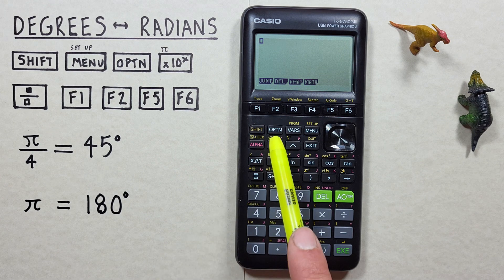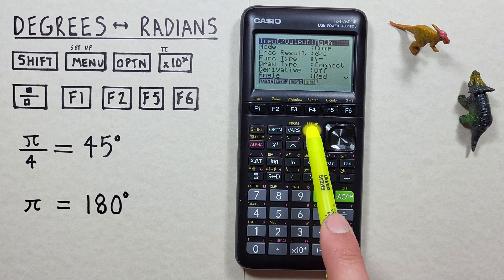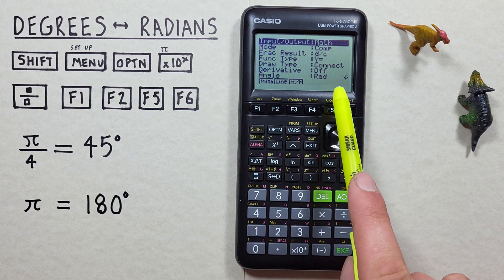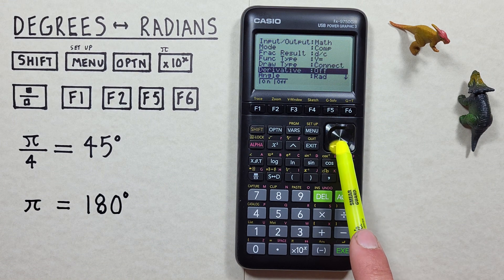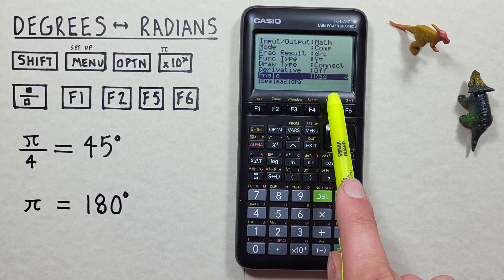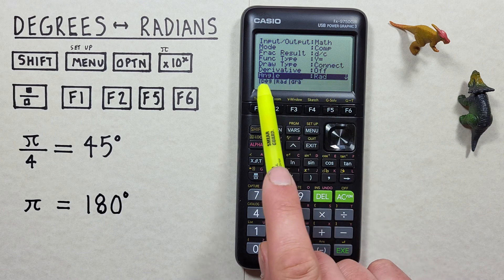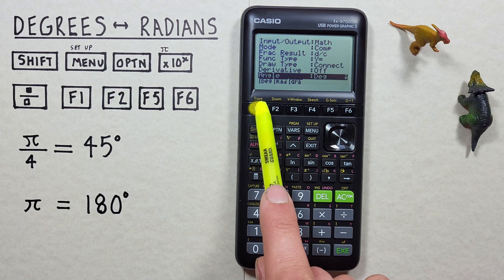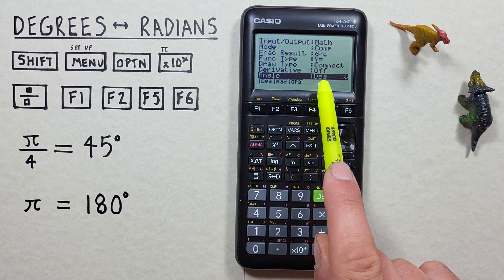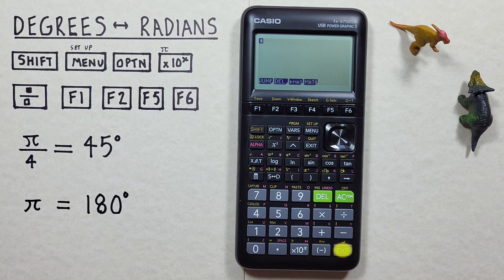To do that, we press the shift key, and then the menu key for the setup menu. Then if we scroll down to the angle option — typically this calculator is in radians — we need to change that to degrees. So we press f1 to highlight degrees. We see that's changed, and then we can press the execute key to confirm that. Now we can enter our radians.